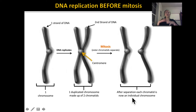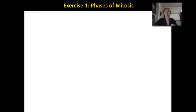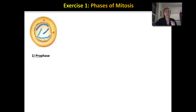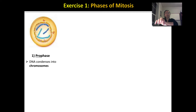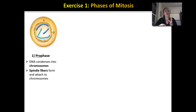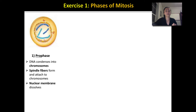Before mitosis happens, the DNA is going to replicate. Then during mitosis — this nuclear division — the sister chromatids actually separate and move into two different cells. The phases of mitosis begin with prophase. 'Pro' meaning first: the DNA condenses into chromosomes, spindle fibers form and attach to the chromosomes, and the nuclear membrane dissolves. The nuclear membrane dissolves so the DNA is free to move around in the cell.